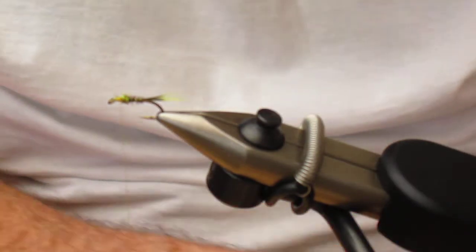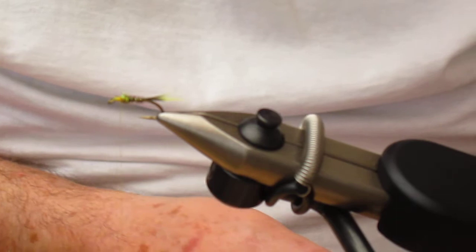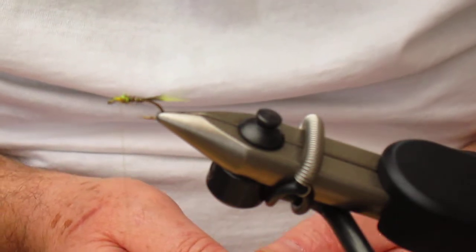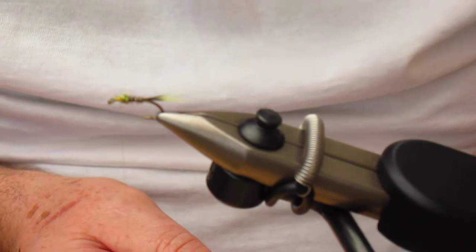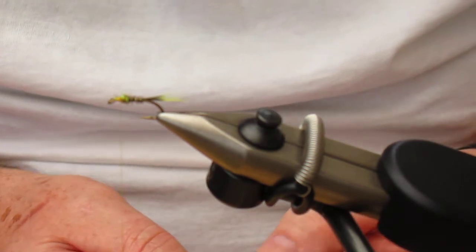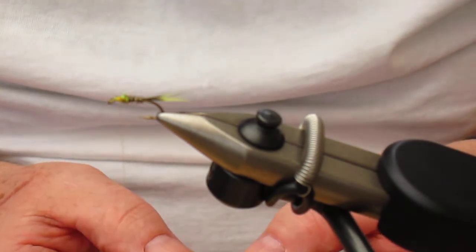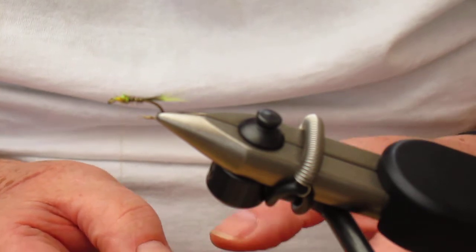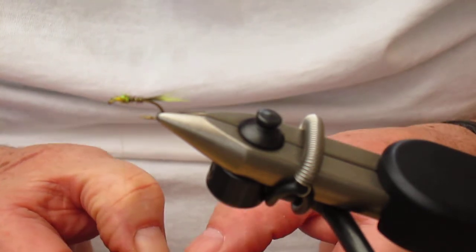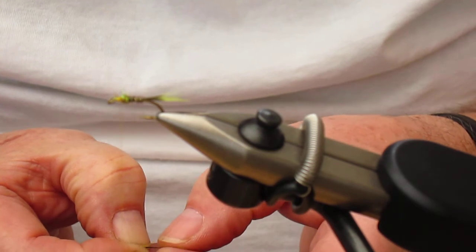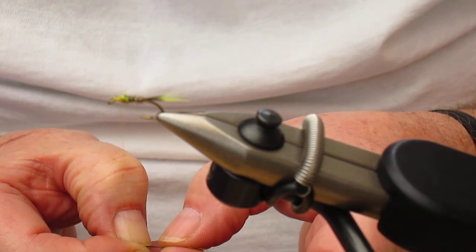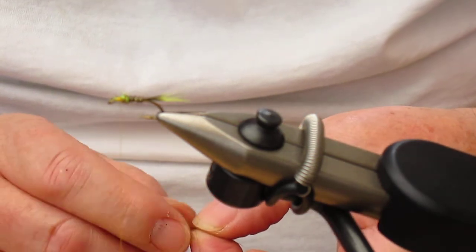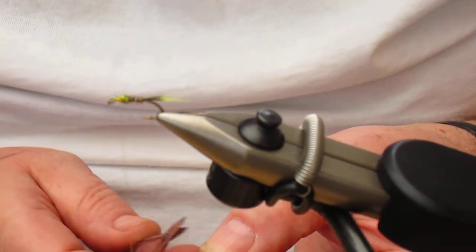Now the hackle is going to be the same as we used for the tail. It's the dyed fluorescent green hen grizzle. We're going to tie this in by the tip. So to prepare that, I'm pulling the fibers down, just so we get a nice soft sloping back hackle.